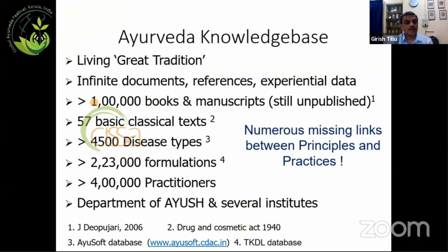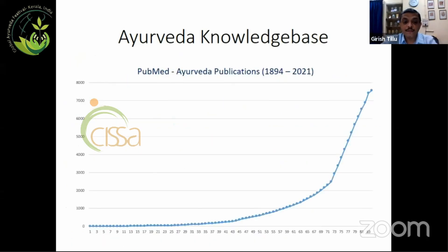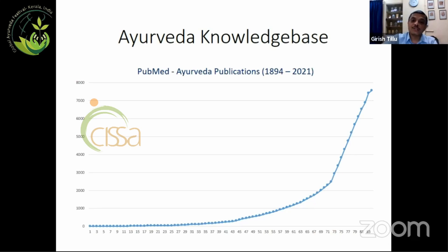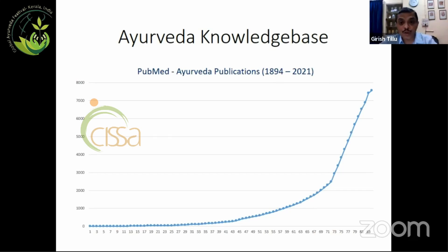There are hundreds and thousands of books which are still unpublished. What is important is there are numerous missing links between principles and practices, and it is a living practice. When we look at Ayurveda's knowledge base and research papers published in the last 110 years, we see that in the last 10-15 years there has been an upsurge of Ayurvedic-related publications — because of many new journals and, importantly, growing awareness of the Ayurvedic fraternity about research. This change is a welcome situation, but it is not sufficient. We have to go a long way.